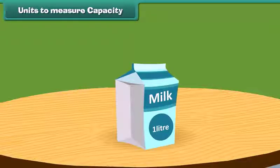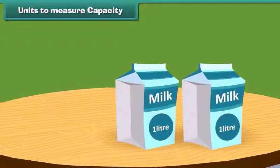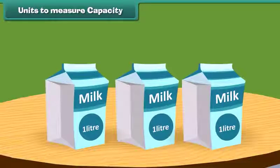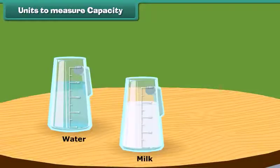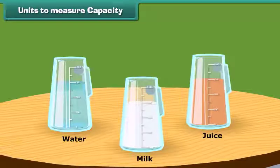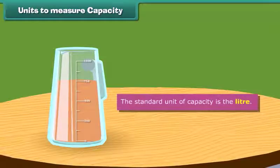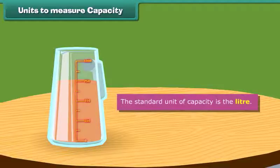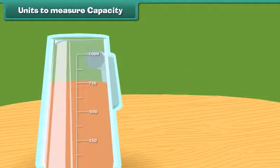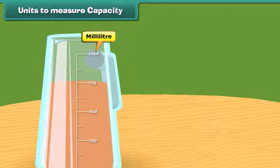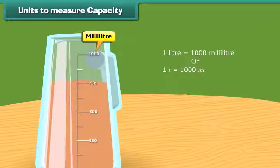How much milk comes into your home daily — 1 liter, 2 liters, or more? The capacity of liquids like water, milk, juice, etc. is measured in terms of liters or milliliters. The standard unit of capacity is the liter. One liter divided into 1,000 equal parts gives 1 milliliter. So 1 liter is equal to 1,000 milliliters.